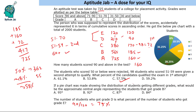If a pie chart was made showing the distribution of students getting different grades, what would be the approximate central angle representing students that got grade B? How many students got grade B? 185. So the angle will be 185 out of 725 times 360 degrees. This is approximately two times, so we can say approximately 92 degrees. The answer is 92 because 95 is not possible — this has to be less than 95, and 87 looks too low. So the answer is 92 degrees. Understanding what a cumulative chart is is important to solve this question.